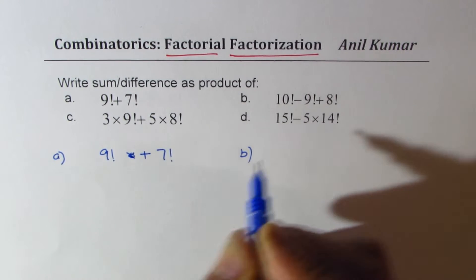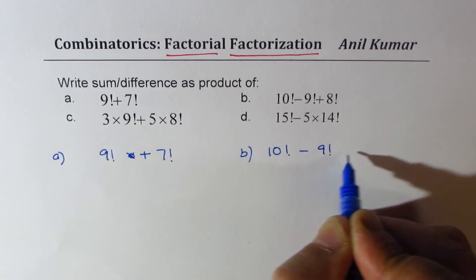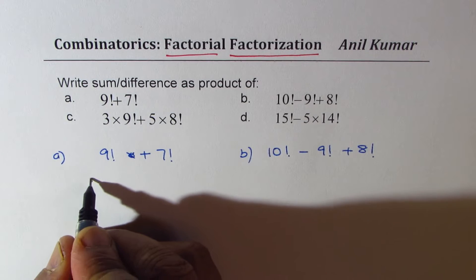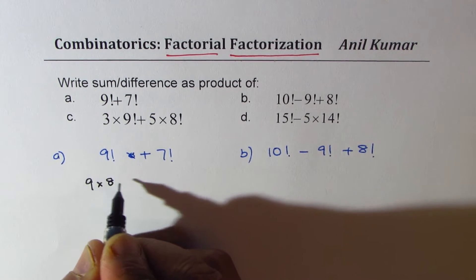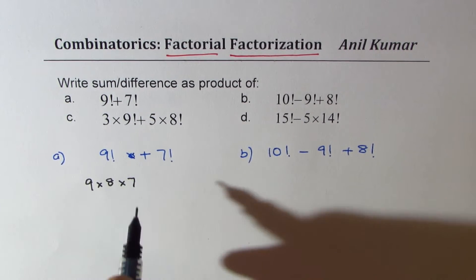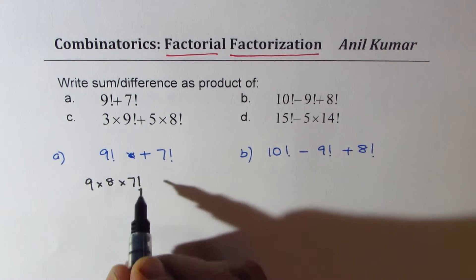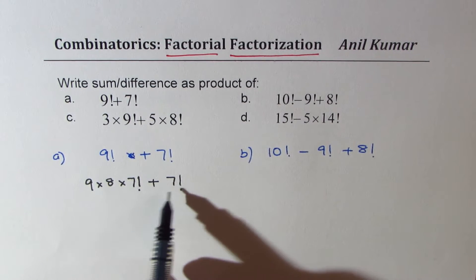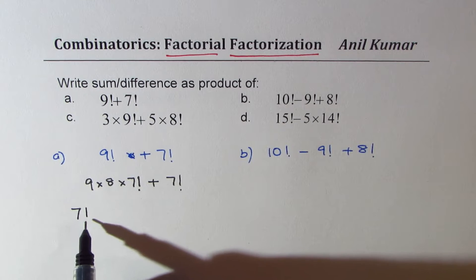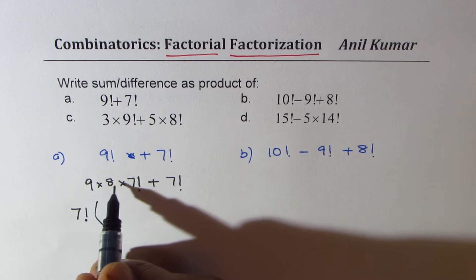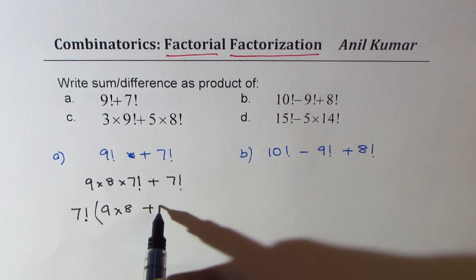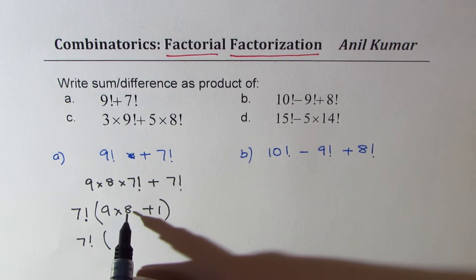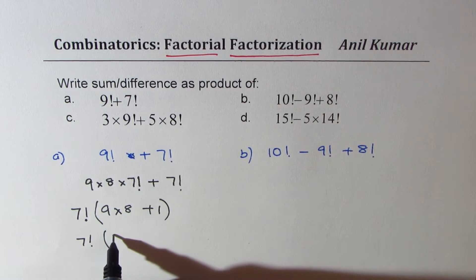Let's do part A and B. Part A is 9 factorial plus 7 factorial. Now when I say 9 factorial, I could write this as 9 times 8 times 7 factorial — and since we have 7 factorial, I'll stop here and write this as 7 factorial plus 7 factorial. You can see 7 factorial is common, so we'll factor out 7 factorial and we get 9 times 8 plus 1.